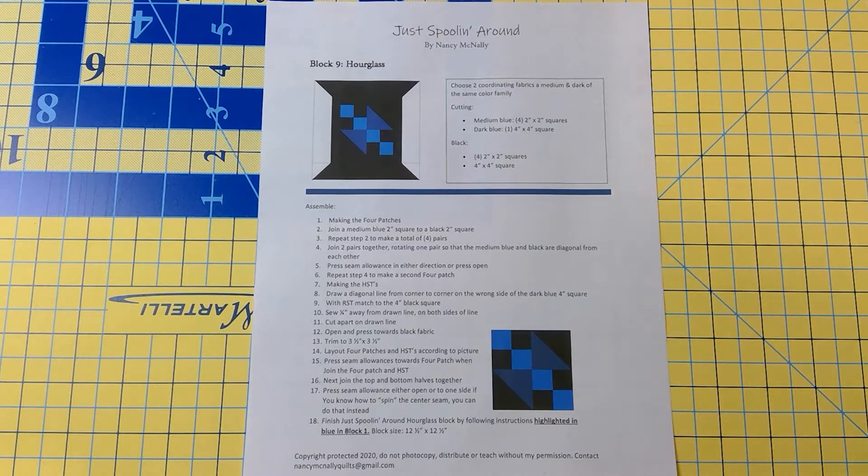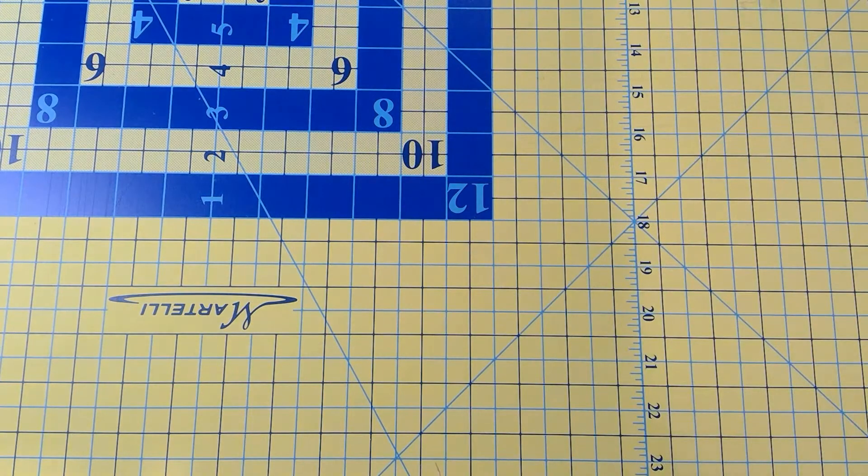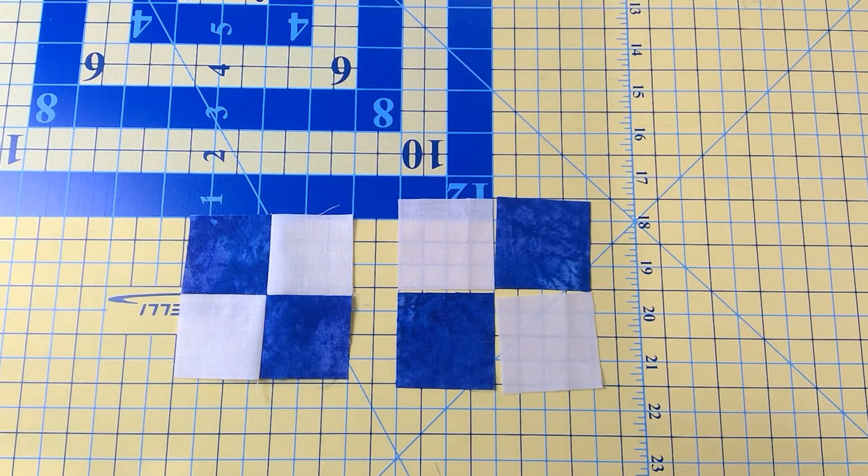Hi everyone, welcome back to Just Spooling Around. We're on block nine, the hourglass block. You can see I got the pattern here. I hope you have your fabrics all cut and you're ready to go.